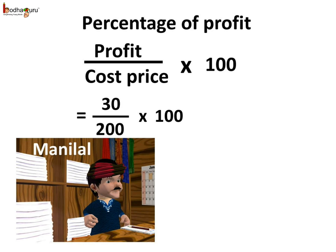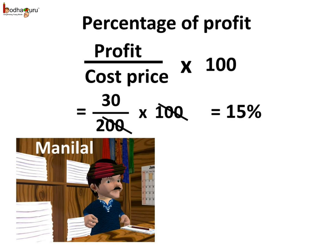What is the percentage of profit Manilal made? Manilal made 30 divided by 200 multiplied by 100 as the percentage of profit. We can divide 100 by 200, so the profit percentage is 30 divided by 2, which equals 15. Hence, the percentage of profit is 15 percent, meaning he would make rupees 15 as profit for every 100 rupees he spent.